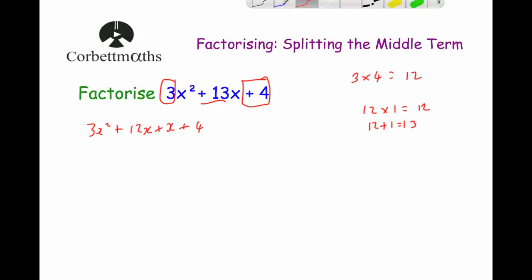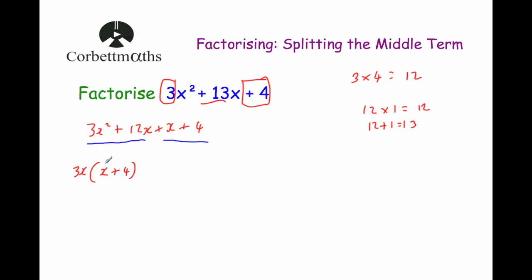We split the middle term as 3x squared plus 12x plus x plus 4. For the first half, the common factor is 3x, giving us 3x(x + 4). For the second half — x and 4 — the only common factor is 1, so we write 1(x + 4). Both brackets are x plus 4, so we take that out and are left with (x + 4)(3x + 1).